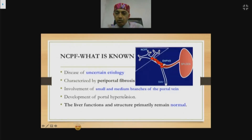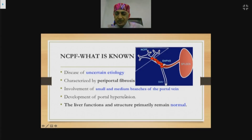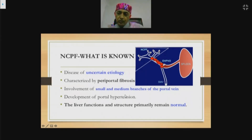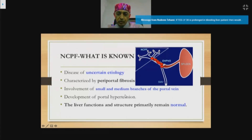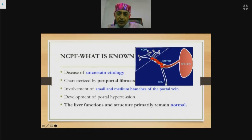NCPF is a disease of uncertain etiology characterized by extensive periportal fibrosis involving small and medium branches of the intrahepatic portal venous radicals, pathologically showing phlebosclerosis and phlebothrombosis resulting in obstruction to portal blood flow. Importantly, liver function and structure tend to remain normal in these patients, which is fortunate for their prognosis.